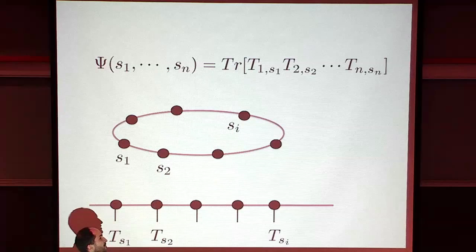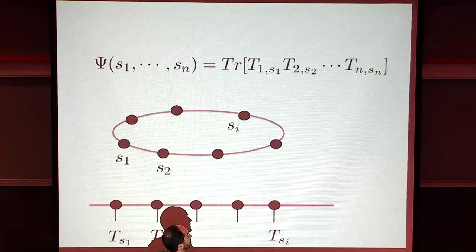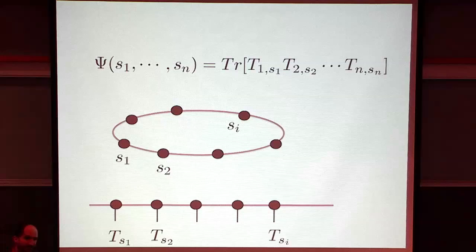For each site, we have two such matrices corresponding to spin plus a half or minus a half. We contract all the indices of these tensors and get a number that depends on all the spins. The tensors could all be different, or they could all be the same. If the system is translation invariant, then we'll have the same tensor for all of them, giving a translation-invariant wave function.